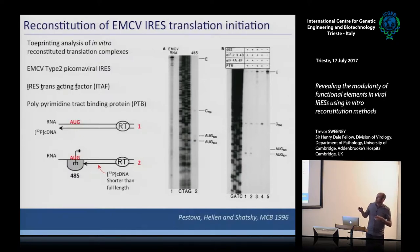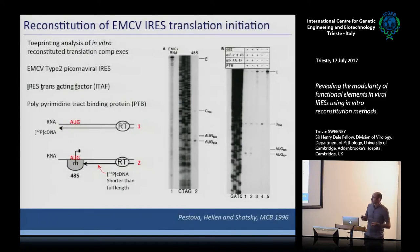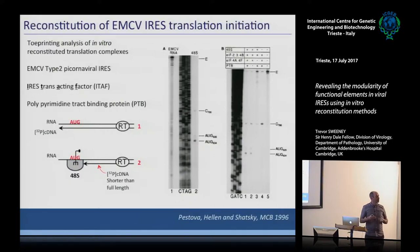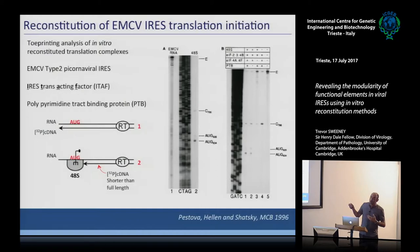PTB is now referred to as a member of the class called IRES trans-acting factors, or ITAFs — proteins not normally involved in translation but that stimulate IRES activity. There's also an extra stop that appears when EIF4F is present and disappears when it's removed, either due to a change in RNA structure or the protein binding the RNA and arresting the reverse transcriptase. This was the first clue that EIF4F — containing EIF4G or EIF4A — could directly interact with the viral IRES.